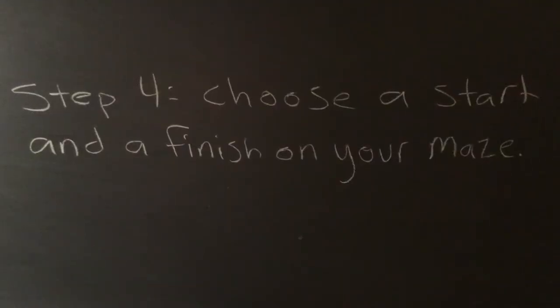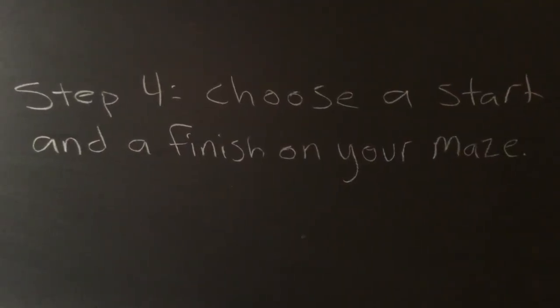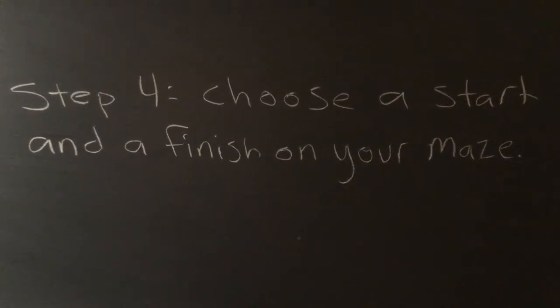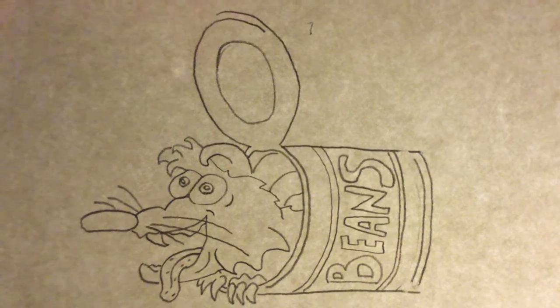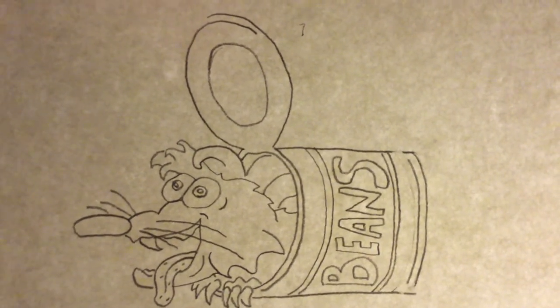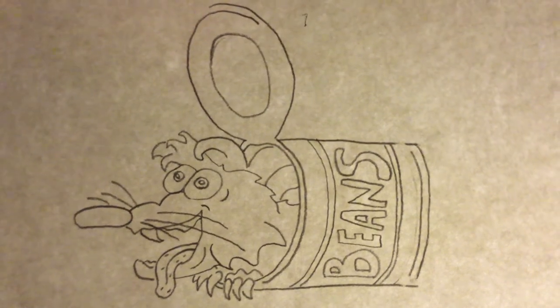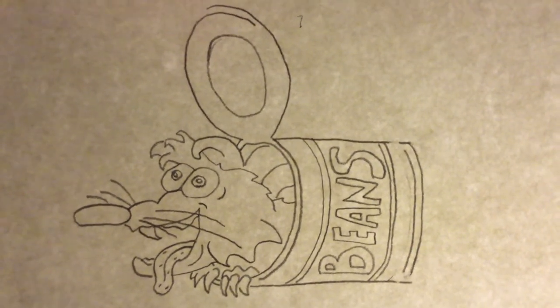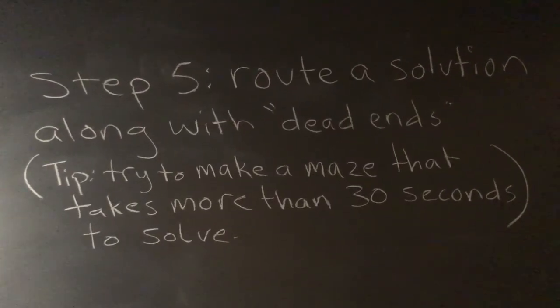After you've traced it, step four: choose a start and a finish on your maze. Here's the drawing after I've selected the beginning and the end. I'll write start and finish on it when it's done.